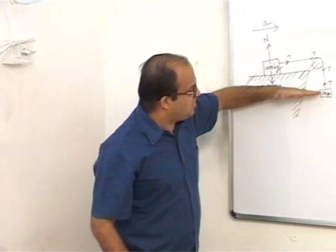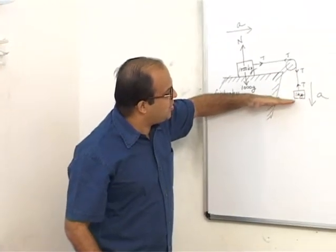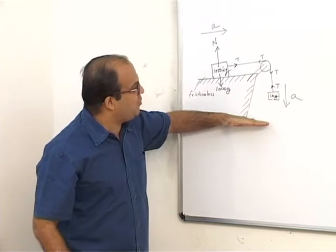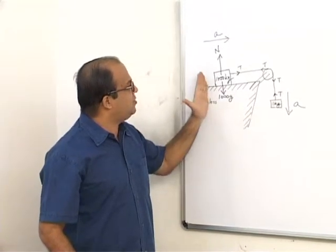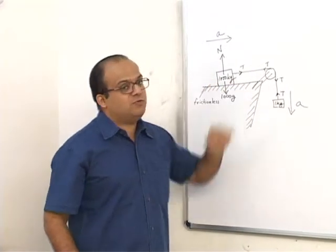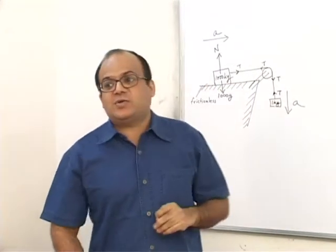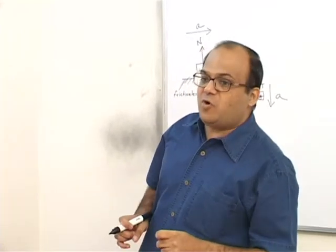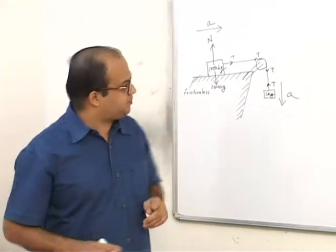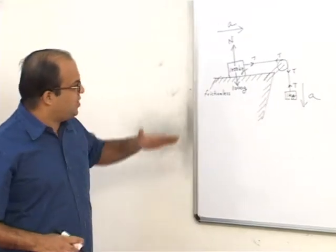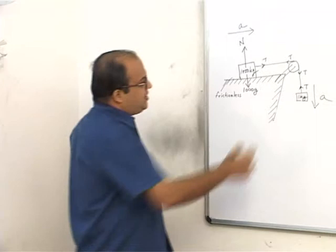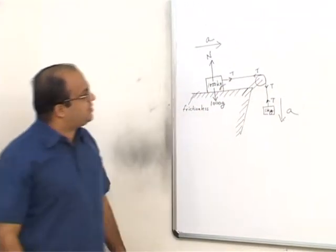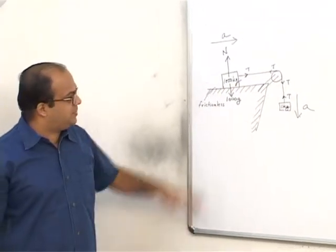If this object is going down with an acceleration of 4 m/s², this object will move to the right with an acceleration of 4 m/s². So if this is accelerating down with acceleration A, this will move to the right with acceleration A.